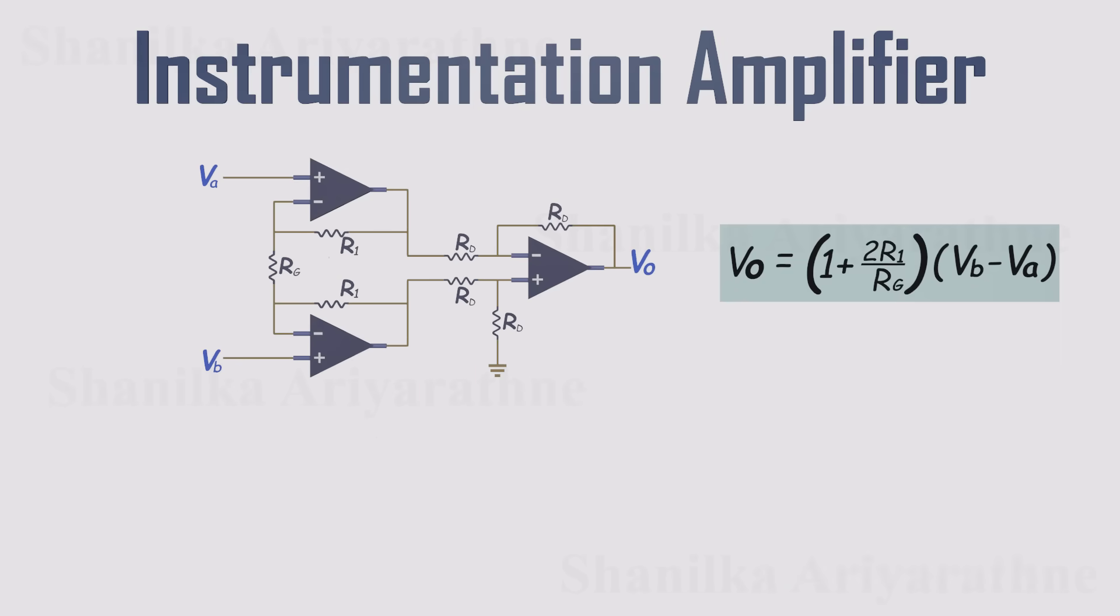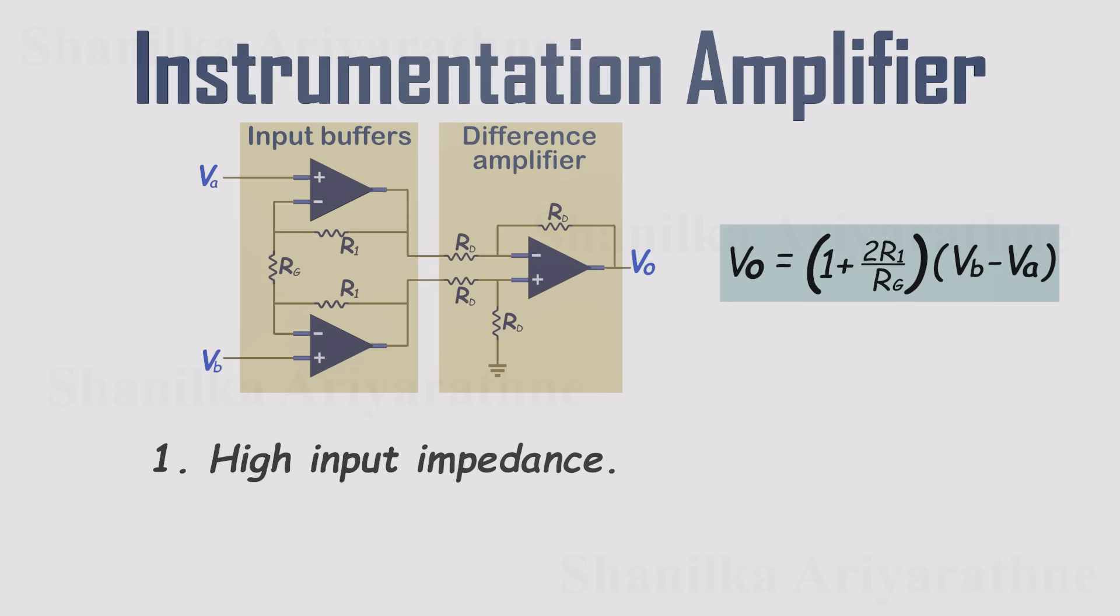And that's it! The instrumentation amplifier solves all the major drawbacks of the simple differential amplifier. And it does so with a clear two-stage design. The first stage uses two input buffers, giving the circuit a very high input impedance and preventing source loading. The second stage is a perfectly balanced differential amplifier, which cancels out common mode signals while providing a differential gain of 1.